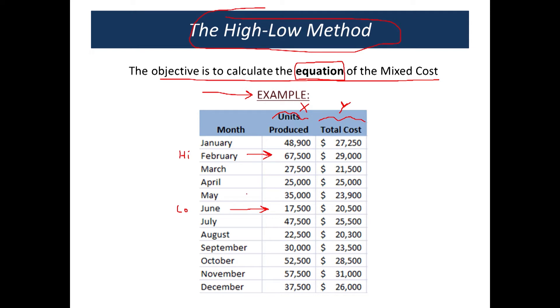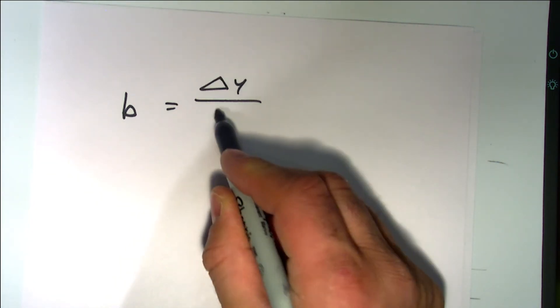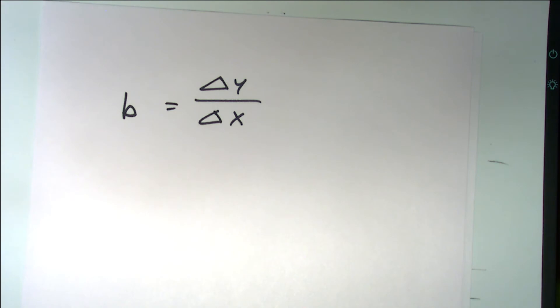Once we've determined the high month and the low month, we're going to use all the data from those months and figure out the equation of the mixed cost. The first thing we're going to do is determine the variable cost. Let me go back to the document camera.